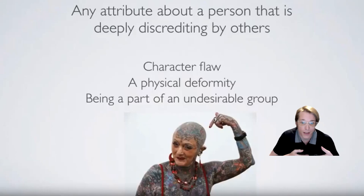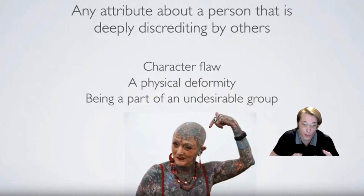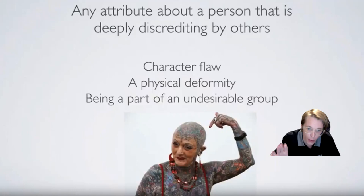Goffman identifies three forms. A person may be labeled with a stigma if they have a character flaw, a physical one, or if they're part of a group that isn't accepted. The example of women who are heavily tattooed from this week's documentary may fit into the physical flaw along with being defined by a group. You can see that these are not mutually exclusive categories — a person's deviant label may overlap with different stigma forms.